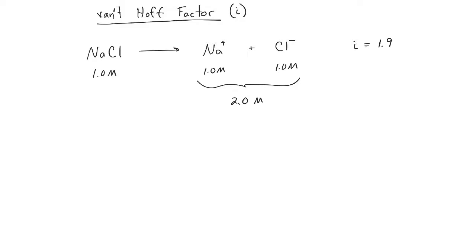So how do we use that in our problem? The van't Hoff factor tells us what number we can multiply our original solution concentration by in order to get the actual concentration of dissolved particles in the solution. A 1.9 for sodium chloride means that we take our 1.0 molar, multiply it times 1.9, and we're going to actually get 1.9 molar total particles in solution.